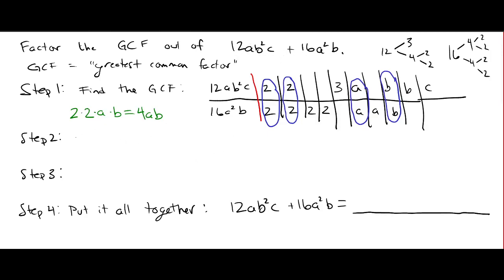The next step, we're going to divide the first term, 12ab squared c, by the GCF. And so if we take 12ab squared c, and divide by 4ab, what's going to happen?